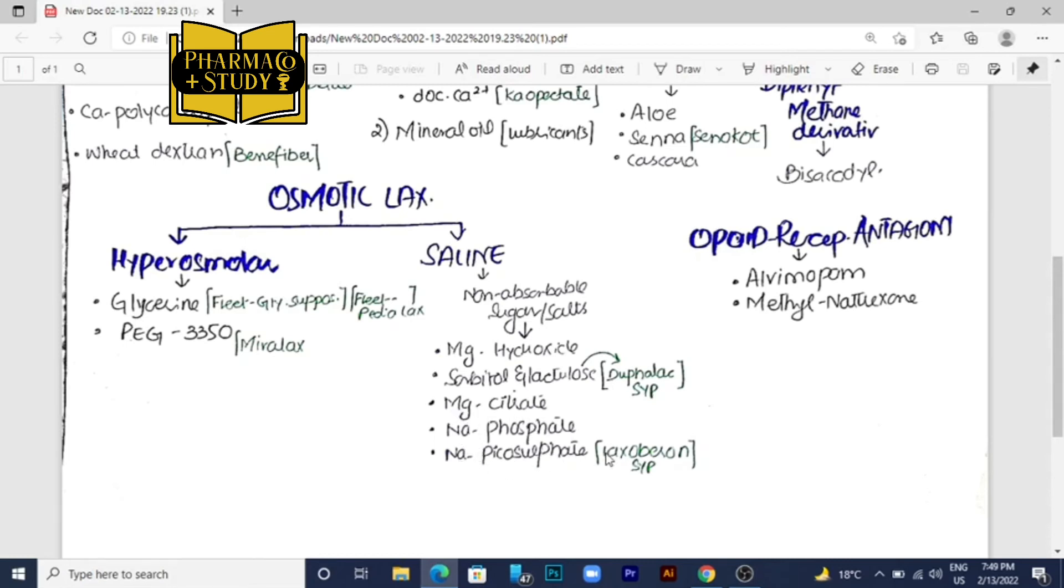Other drugs in this class are magnesium citrate, sodium phosphate, and sodium picosulphate that comes under the name Luxoberon. Luxoberon is also a very important drug used for treatment of acute and chronic constipation, mostly for chronic constipation which is not responding to any drug. We will give sodium picosulphate to treat this type of constipation.